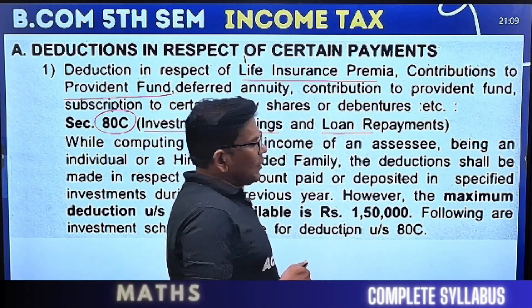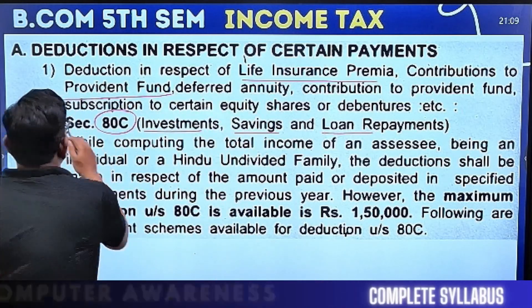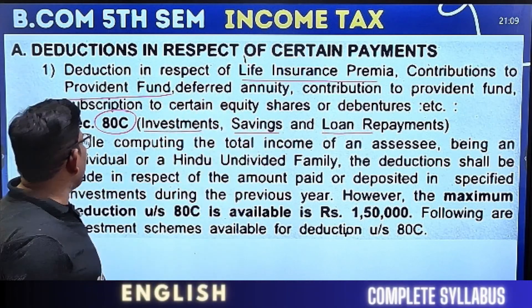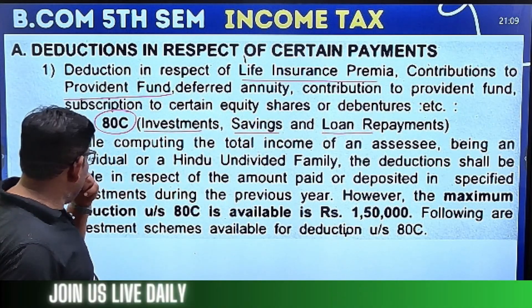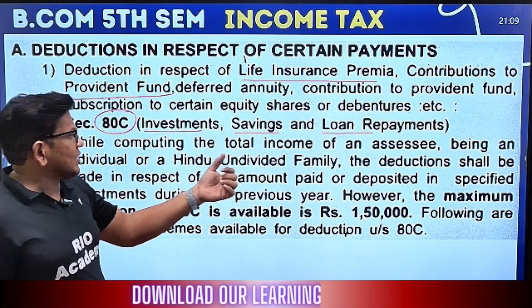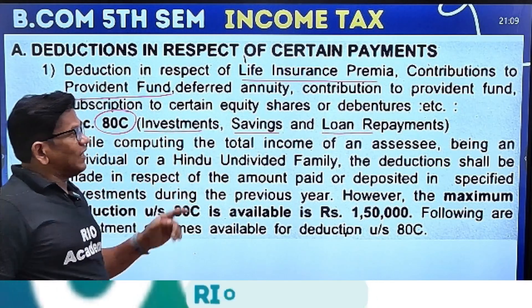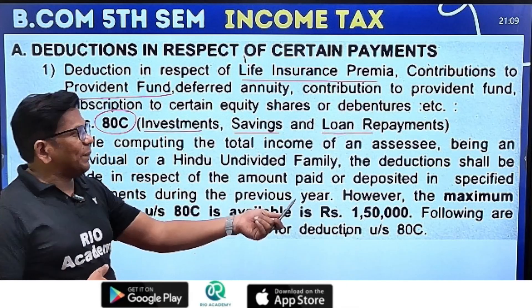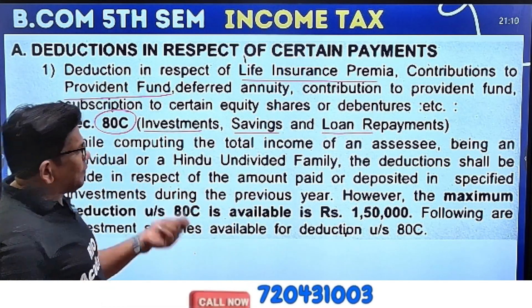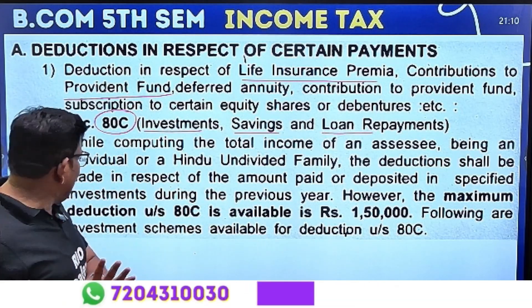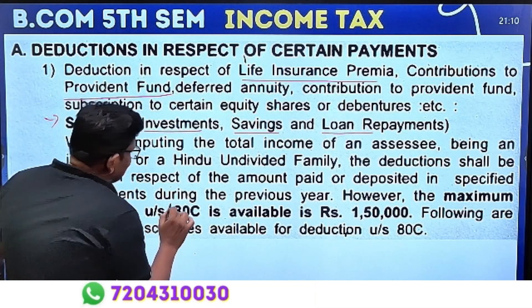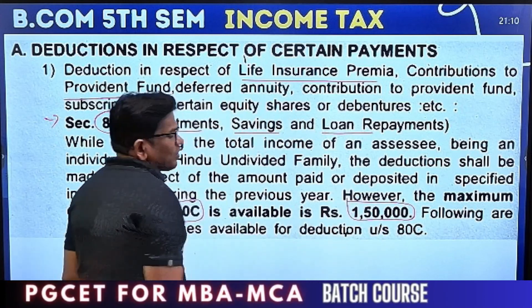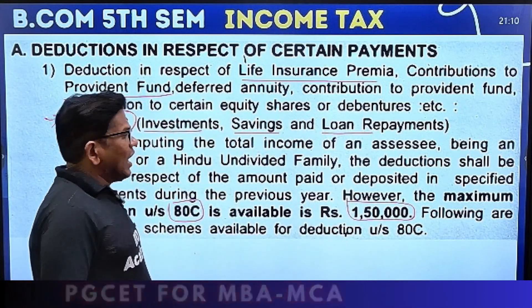Under Section 80C, while computing total income of an individual or HUF, the reduction shall be made in respect of amounts paid or deposited in specified investments. The maximum deduction under 80C is 1.5 lakh rupees.